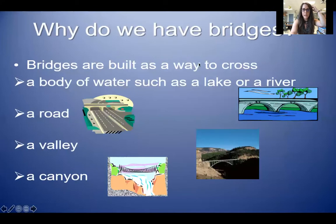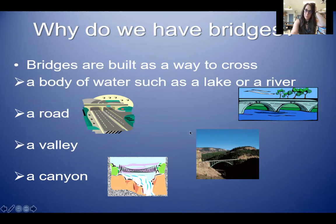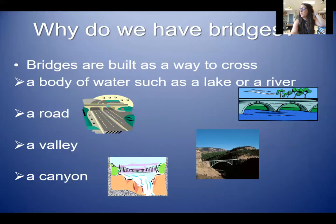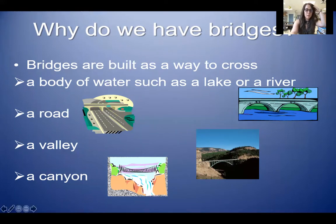So we're talking about bridges. Why do we have bridges? Bridges are built as a way to cross over things. Sometimes they're built over a body of water like a river or a lake or even sometimes parts of the gulf. Like if you go down to the Gulf of Mexico in Corpus Christi, there's a really big bridge. Sometimes they cross over roads. Sometimes they go over valleys or canyons.